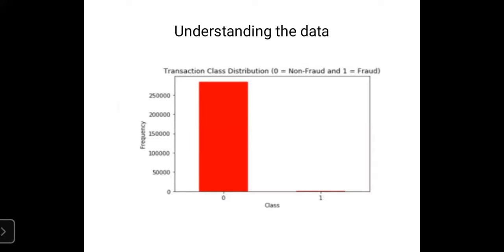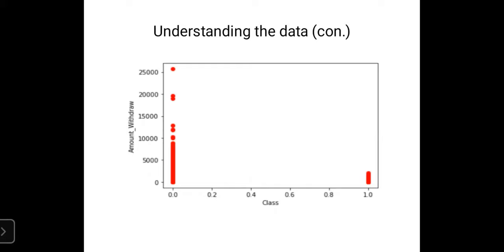This is the first graph that we used to understand the dataset. In this graph, we have seen that the fraud transactions are very less and the non-fraud transactions are very high. So basically, as Faya said in the previous slide, our dataset is very highly unbalanced. From this graph, we can see that it is unbalanced. In the next one...